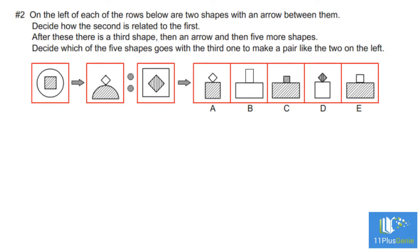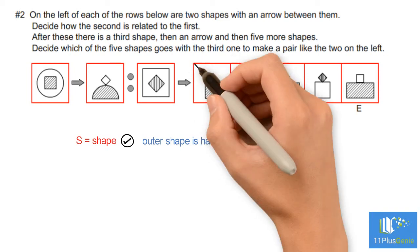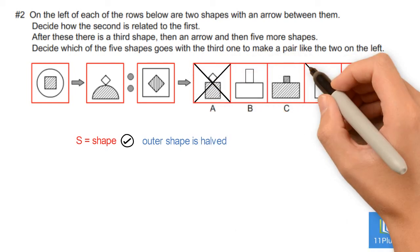Example 2. On the left of each of the rows below are two shapes with an arrow between them. Decide how the second is related to the first. After these there is a third shape, then an arrow, and then five more shapes. Decide which of the five shapes goes with the third one to make a pair like the two on the left. S — Shape: the outer shape is halved. If the square is halved it must form a rectangle, so we can eliminate A and D.